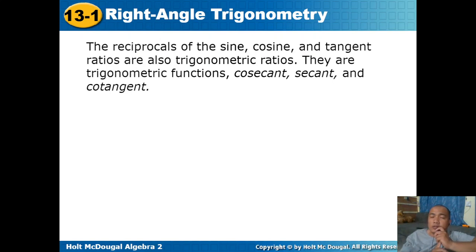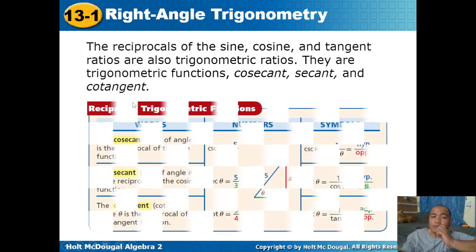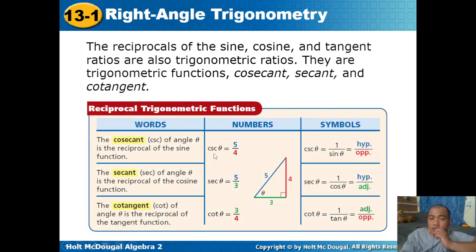The reciprocals of the sine, cosine, and tangent ratios are also trigonometric functions: cosecant, secant, and cotangent. For a triangle with sides 3, 4, and 5: cosecant theta is the reciprocal of sine theta — hypotenuse over opposite side — so 5 over 4. Secant theta is the reciprocal of cosine theta — hypotenuse over adjacent side — so 5 over 3. Cotangent theta is the reciprocal of tangent theta — adjacent side over opposite side — so 3 over 4.